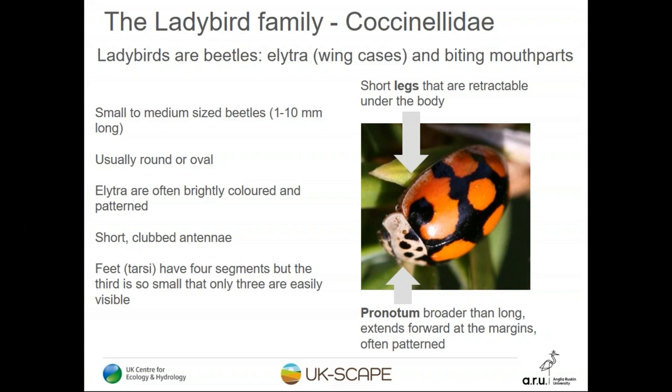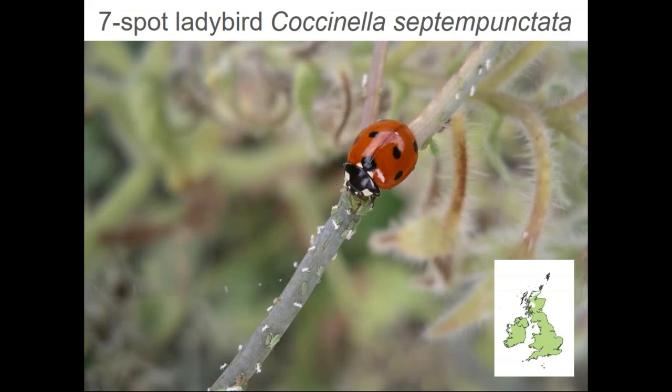When identifying ladybirds, the parts most interesting to look at are the section just behind the head called the pronotum — that shield-like plate — and the leg colour, which can be really useful. The wing case colour is also helpful, and size can be a good indication of species. I often find that the pronotum is a great place to begin because it tends to be more consistent between individuals than the wing cases.